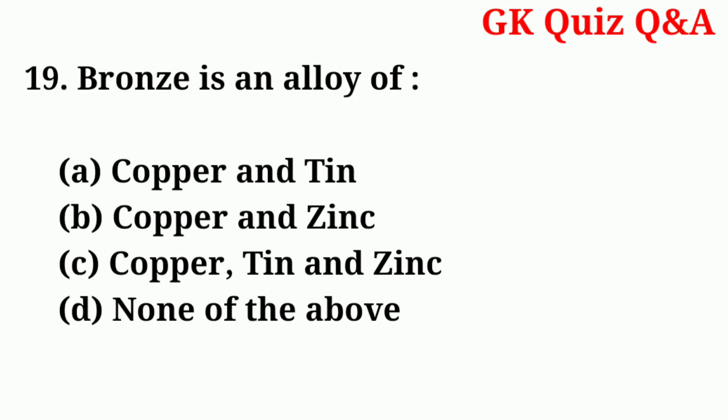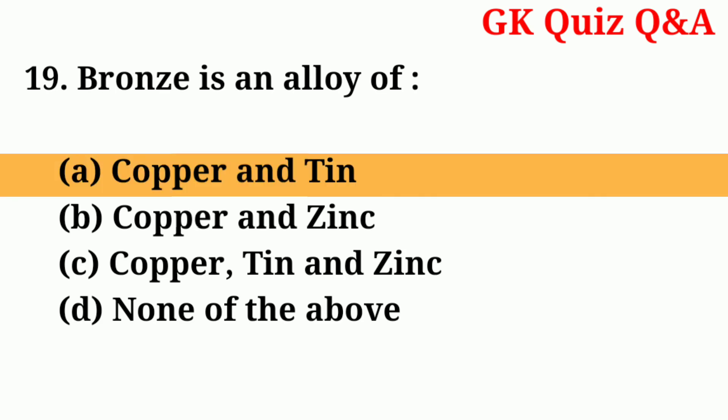Number nineteen: bronze is an alloy of — answer: number A — copper and tin.